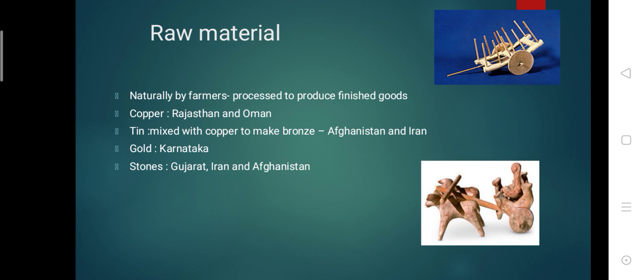For example, cotton is produced by farmers and is a raw material that may be processed to make cloth. While some of the raw materials that the Harappans used were available locally, many items were brought from distant places.